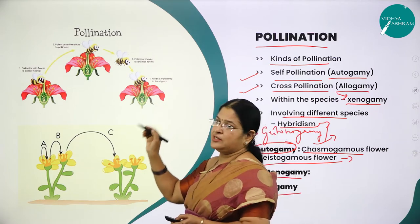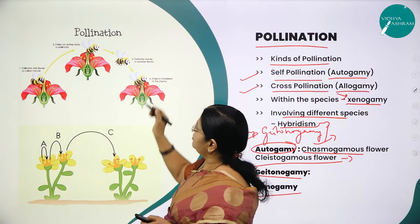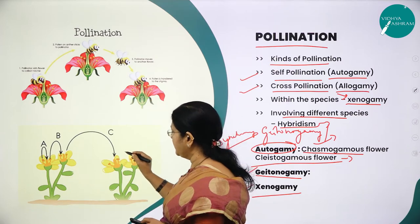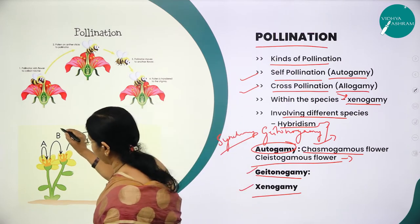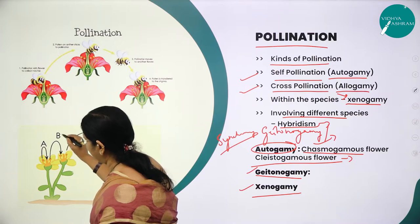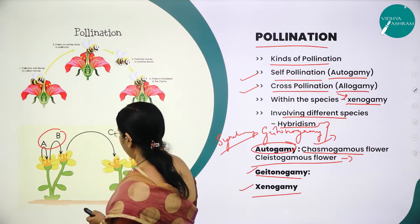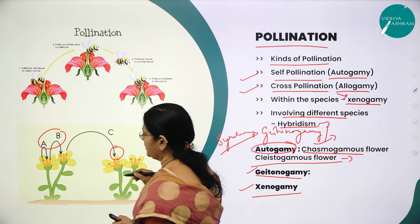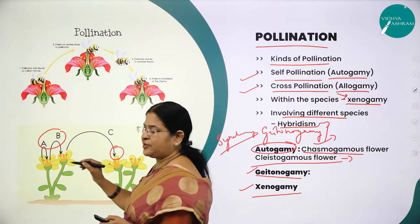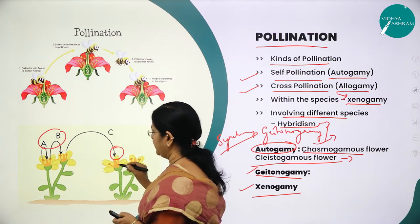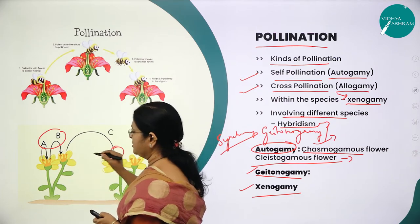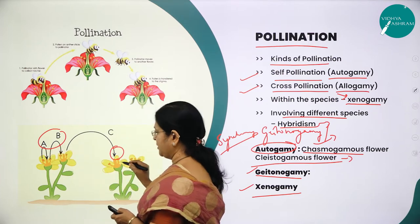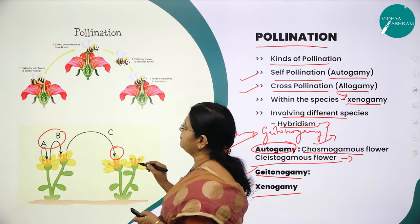Geitonogamy involves pollination between different flowers of the same plant. Here you can see the diagrammatic structure of pollination — autogamy involves the same flower, while geitonogamy involves different flowers of the same plant.